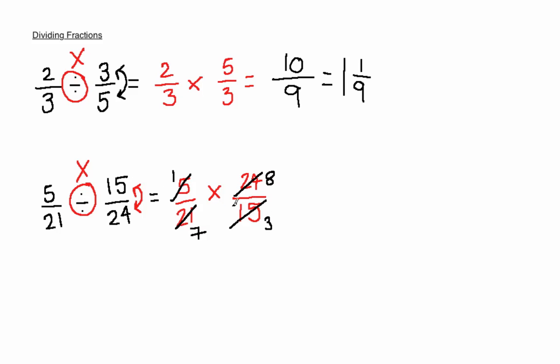We cannot cancel down any further so we now need to multiply across. 1 times 8 is 8. 7 times 3 is 21.